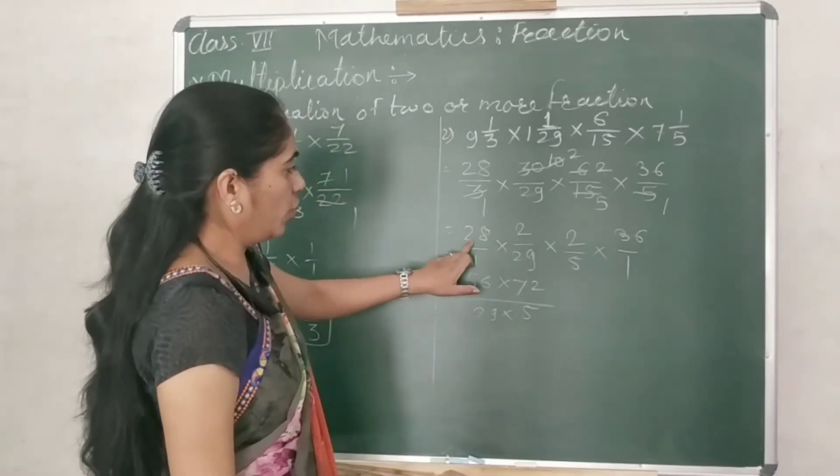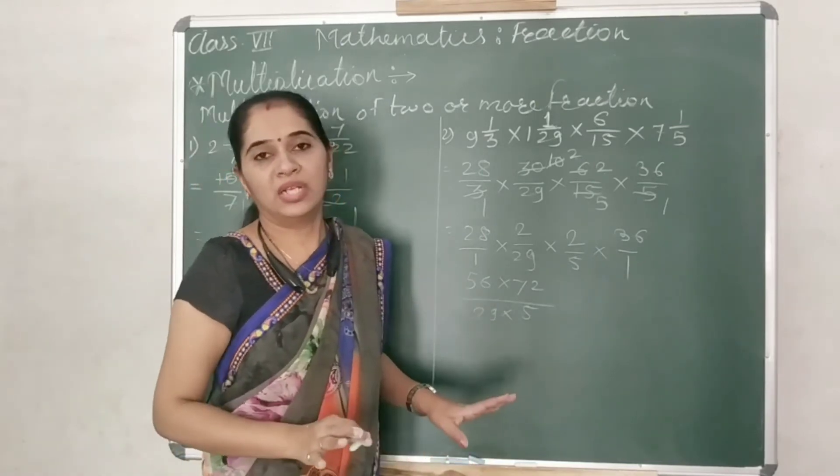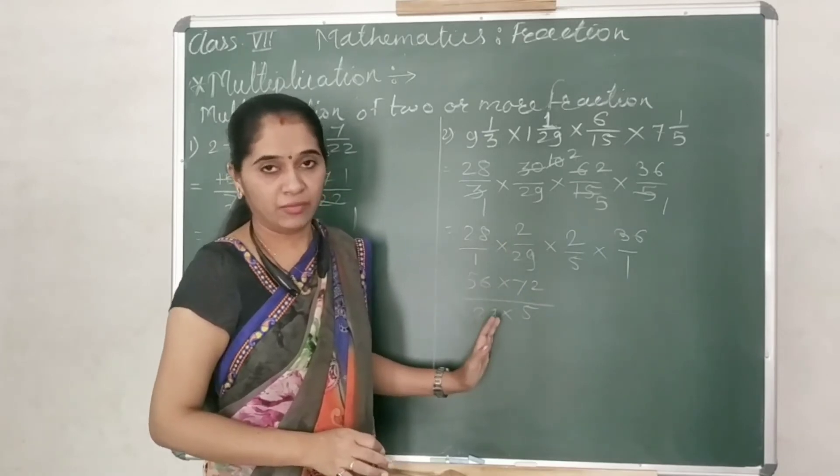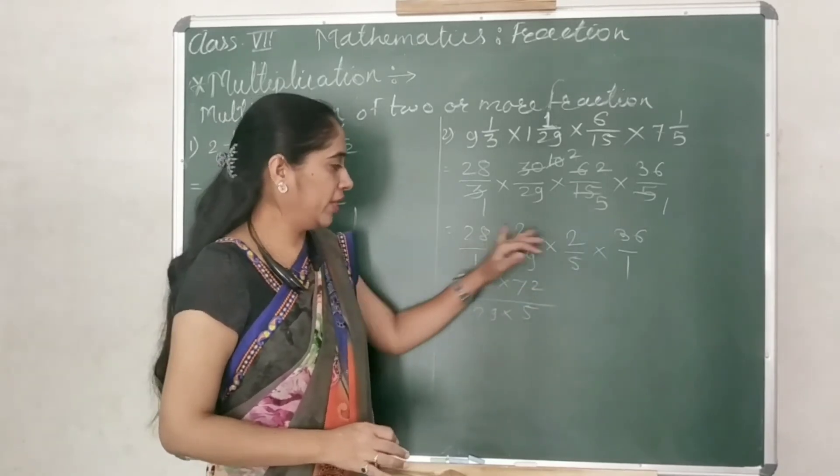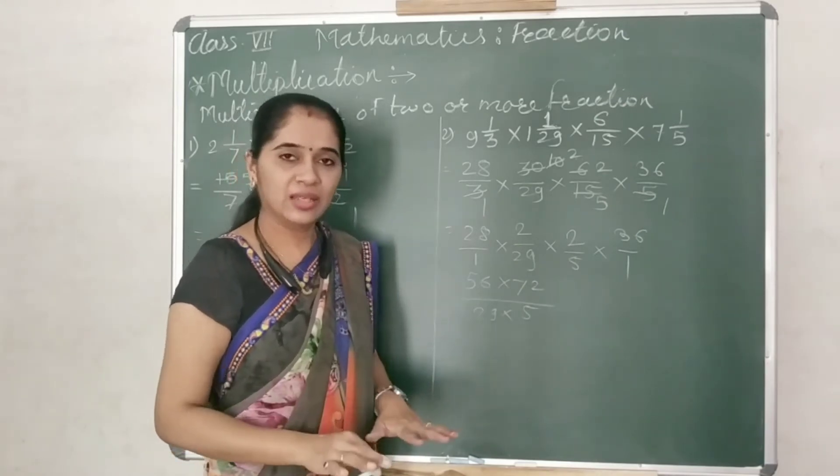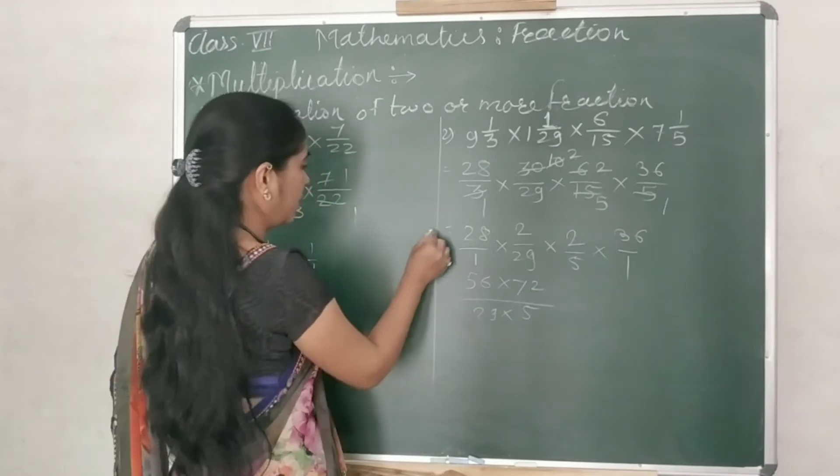28 to the 56 and 36 to the 72 upon 29 multiplied by 5. Here, 28 to the 56. If you don't know this, go for multiplication directly. Don't multiply like I have multiplied over here. Because I know 28 to the 56, 36 to the 72. Calculation comes from practice. If you don't know, go for multiplication.